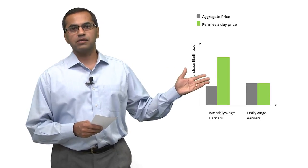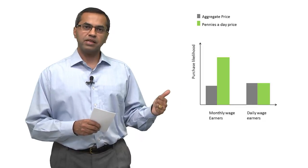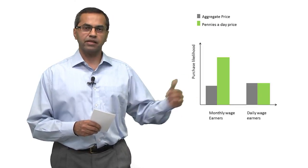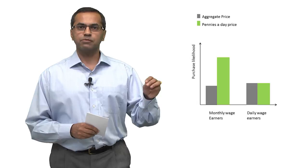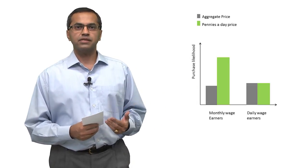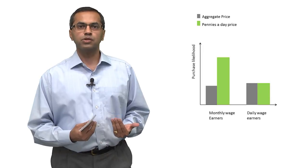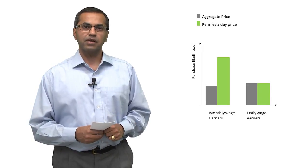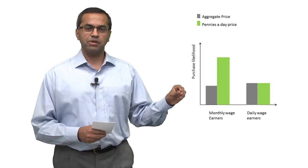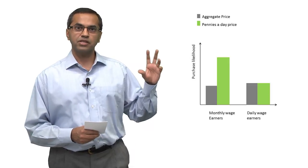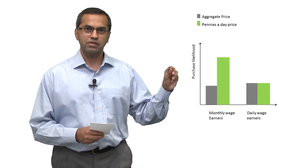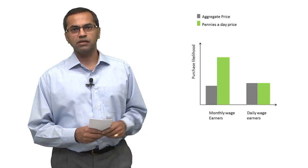In fact, this is what our results might show us. On the left panel, for monthly wage earners, we would replicate the earlier finding. Pennies-a-day does better than aggregate. But on the right panel, what we would find is that there is no difference between the two types of price framing. This is an interaction effect, but one in which the basic effect disappears when you introduce a second variable.